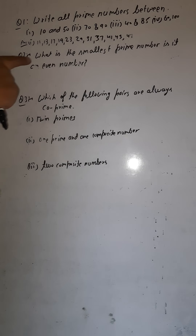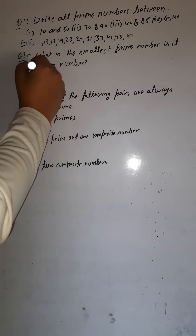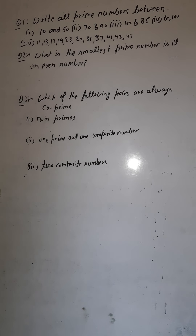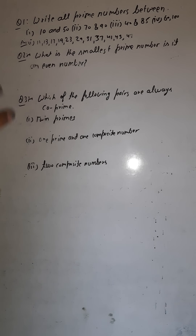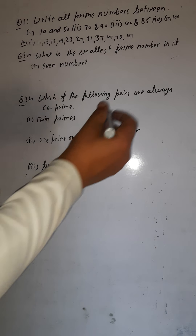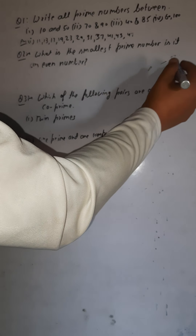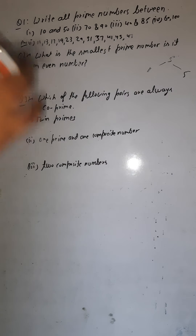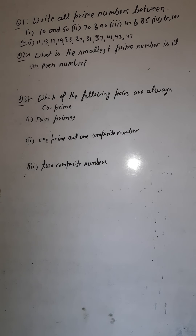Second question: what is the smallest prime number, and is it an even number? One cannot be a prime number because to be a prime number we need exactly two factors — that is one and the number itself. The number should be divisible by exactly two numbers. Like five is a prime number because five is divisible by one as well as by five.